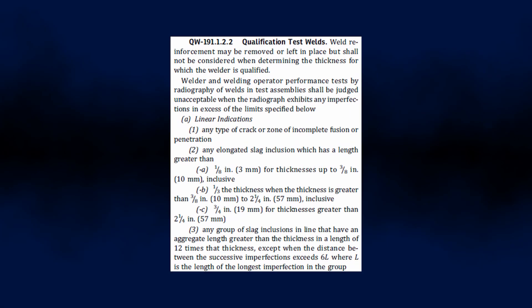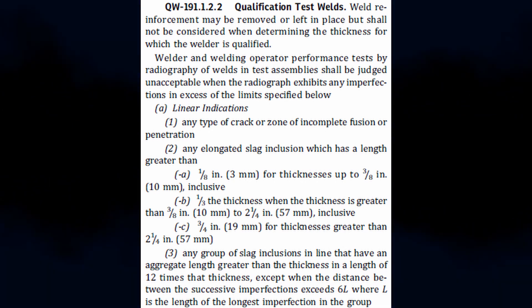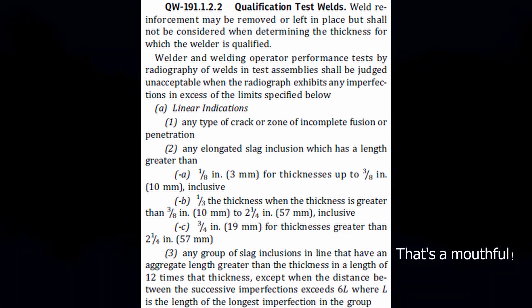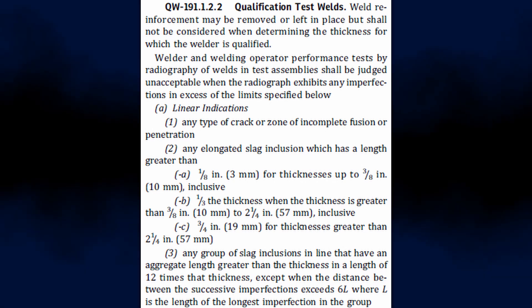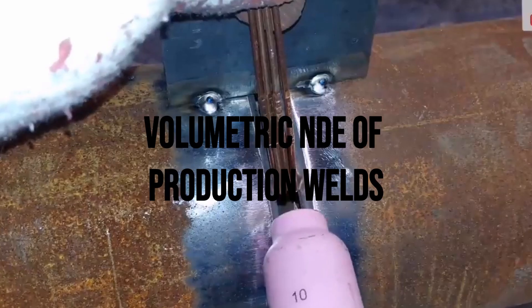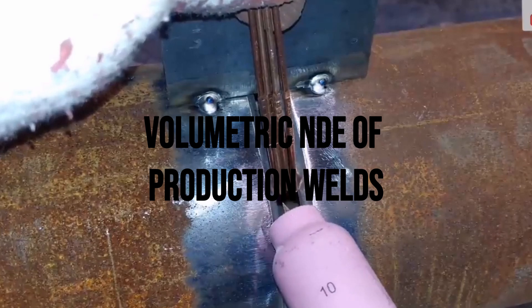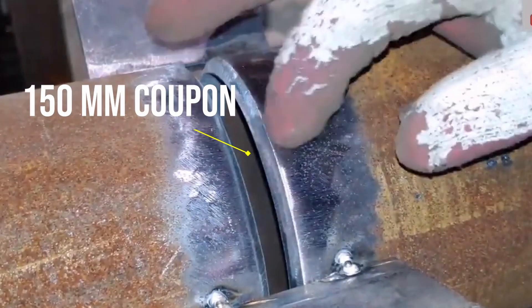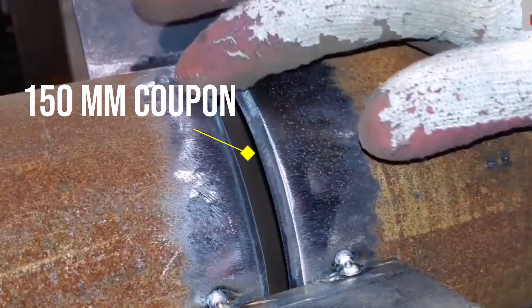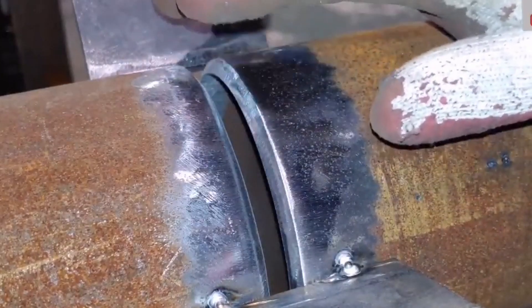For the acceptance criteria of radiographed welds, QW-191.1.2.2 specifies the limits of discontinuities for linear and rounded indications. The welder can also be qualified through production welds using the same acceptance criteria, with the requirement that the test coupon shall not be less than 150 mm and that it covers the entire weld circumference.